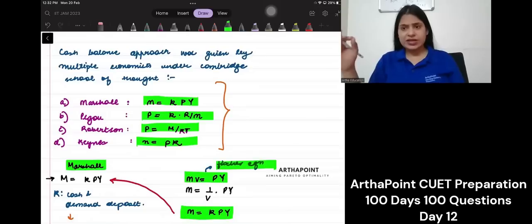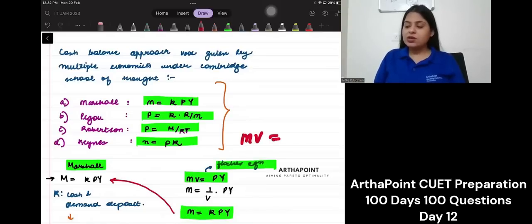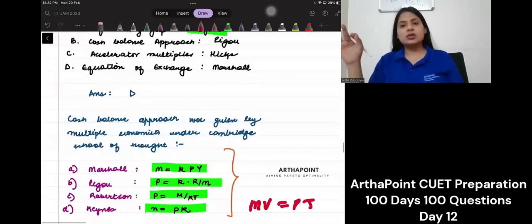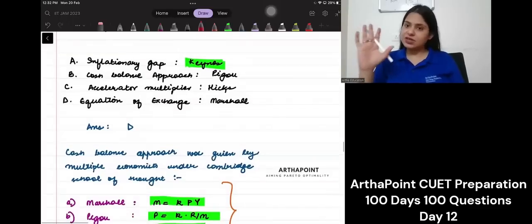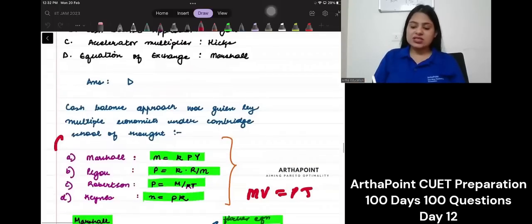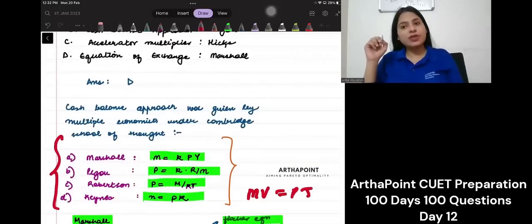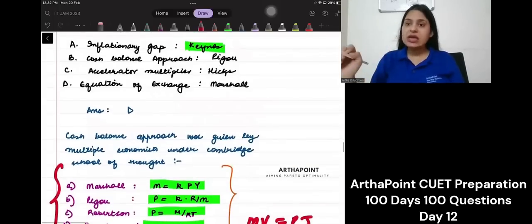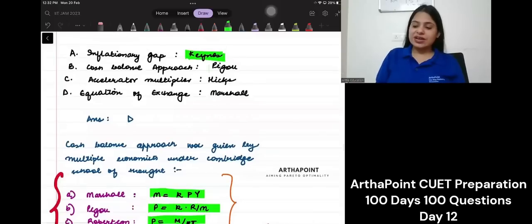So, yes, we are correct in saying M V is equal to P T. We are correct in saying that it was Pigou who gave the cash balance approach. In fact, if you are given any of these classical economists, you can say that the statement is true. This is a correct statement.